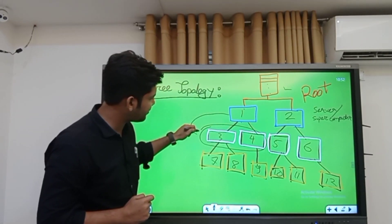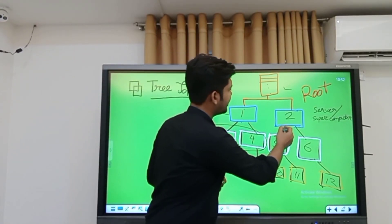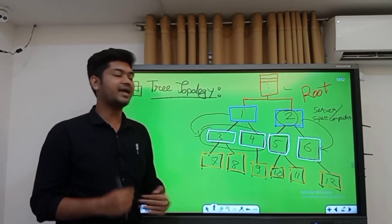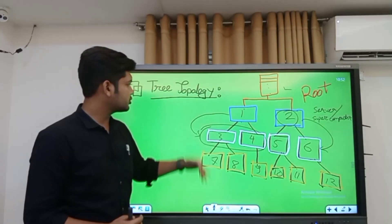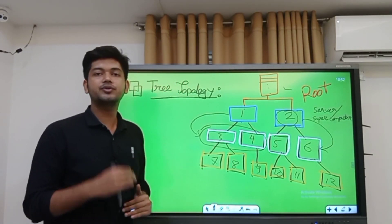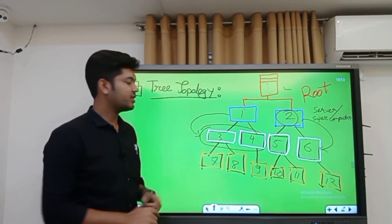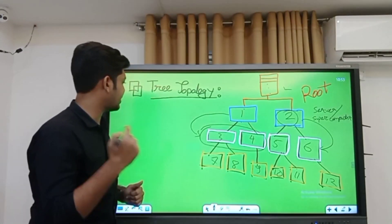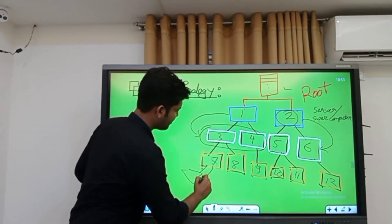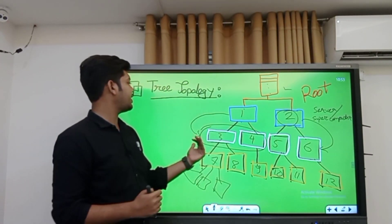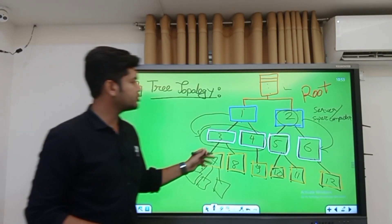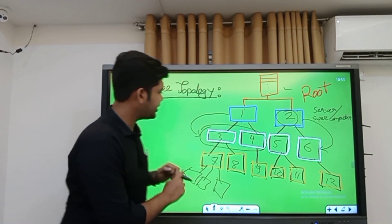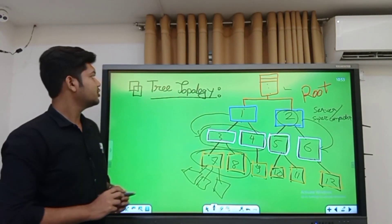Number two is also a host for number five and number six. The process looks like a tree — from one to another, from one to another — and this will keep increasing in tree topology. If I want to create more network, I can use tree topology. If I want to add more computers, I can easily do it; for example, from number seven I can add multiple computers. That's why we call it tree topology. Number three is host for number seven and number eight.